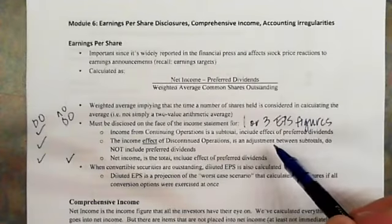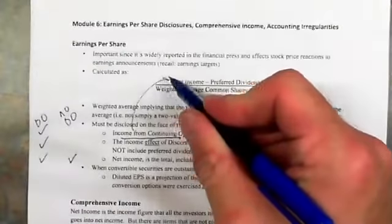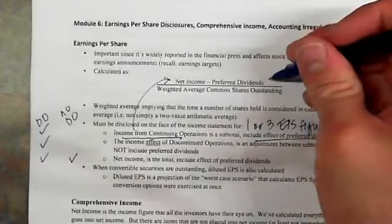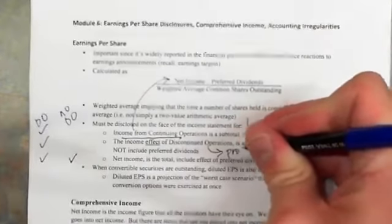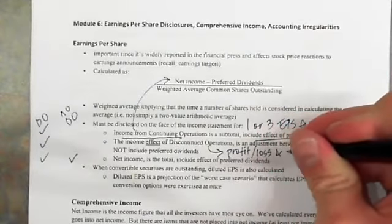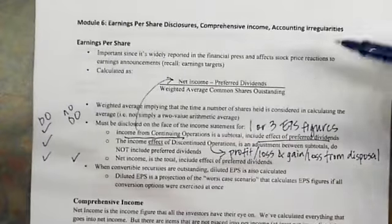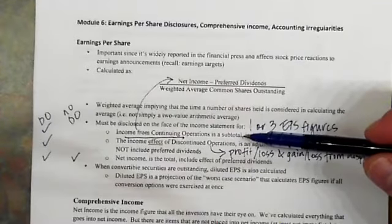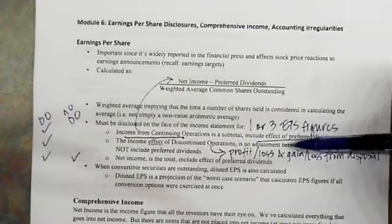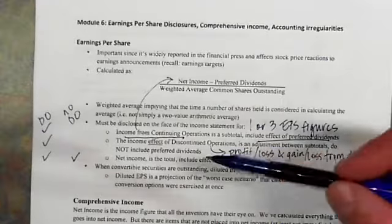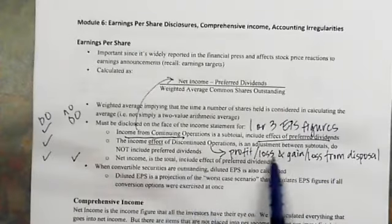When looking at these EPS figures, net income is differently defined. In the first case, income from continuing operations represents our net income number, and we include the effect of preferred dividends. When talking about the effect of discontinued operations, it is just the profit or loss and the gain or loss from disposal. There's a big difference between these two subtotals — net income and income from continuing operations — versus the discontinued operations item, which is a subtotal of only those two things and doesn't include all of the income from continuing operations. Net income will include income from continuing operations, any profits or losses from the gain or loss from disposal, and the effect of preferred dividends.